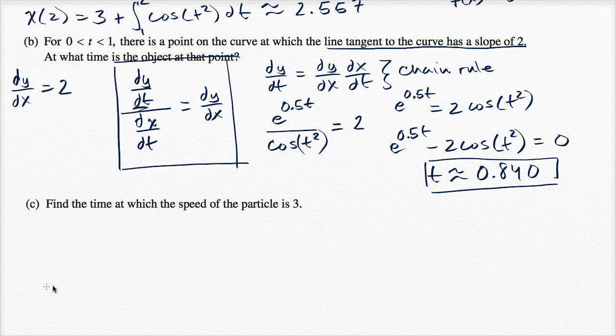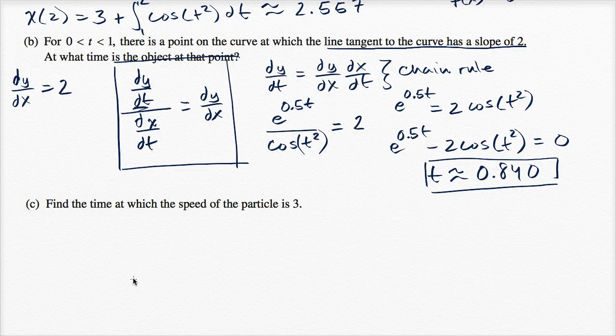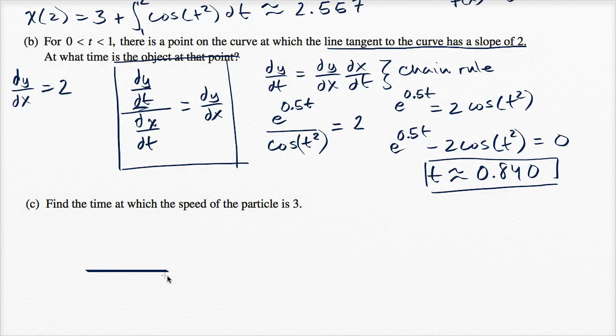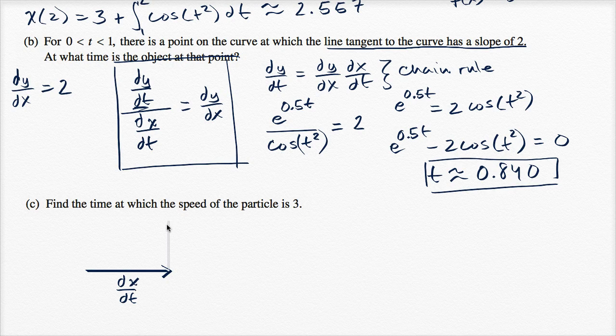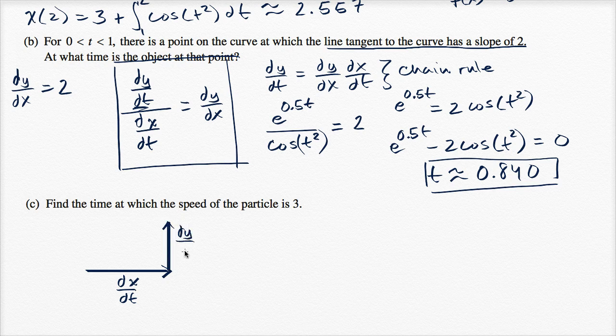So if you have the X, actually let me draw it this way. If you have the X dimension of, or the X component of a velocity right over there, so this is the rate at which X is changing with respect to time, and you have the Y component of the velocity, you have the Y component of the velocity, let's say it looks something like that, that is dy dt.